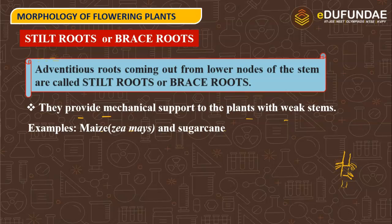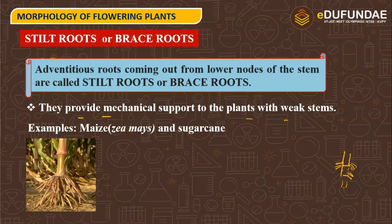Stilt roots provide mechanical support to plants with weak stems. Examples are maize and sugar cane. These are small roots arising from the nodes, and we call them stilt roots.